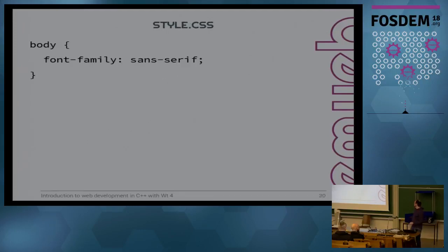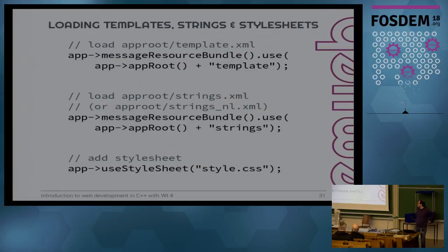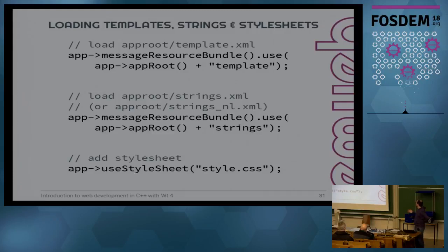The style.css is simple — it just sets the font to sans-serif. To load your style sheets, you use the message resource bundle of the app, call the use() function, give it the path to the app root using the appRoot() function, and then add templates or strings to load them. You don't need to add the .xml extension — it's added automatically. It will also automatically load strings_nl.xml when it detects that the locale is Dutch. You can also add a style sheet with useStyleSheet().